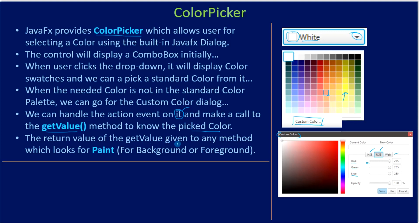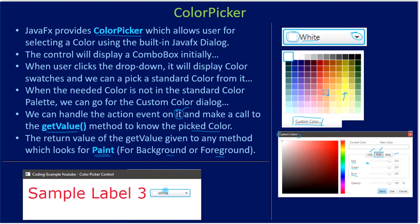The return value of getValue() can be passed to any method which accepts a paint object — for example, you can set the background or foreground of a text field or label. Here we will use the color picker to set the foreground for the label.